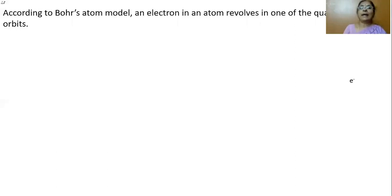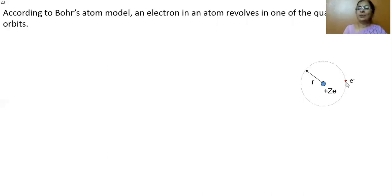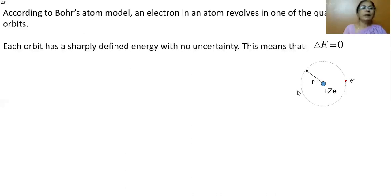According to Bohr's atom model, an electron in an atom revolves in one of the quantized orbits. We say quantized orbits because the energy of the electron in every orbit is quantized. Consider this figure: the nucleus is at the center and one electron is revolving around the nucleus. The radius of the orbit is r. Each orbit has a sharply defined energy with no uncertainty.